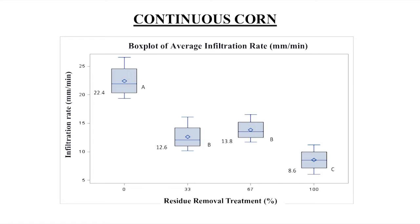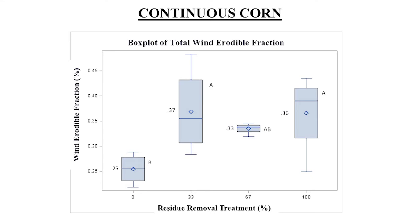The box plots show the differences between treatments. Again, in continuous corn, the infiltration was highest in no residue removal. We also looked at the wind erodible fraction. If you don't have a cover protecting the surface, as well as leaving organic matter to help bind the soil particles together, you can have wind erosion on these soils even under no-till.